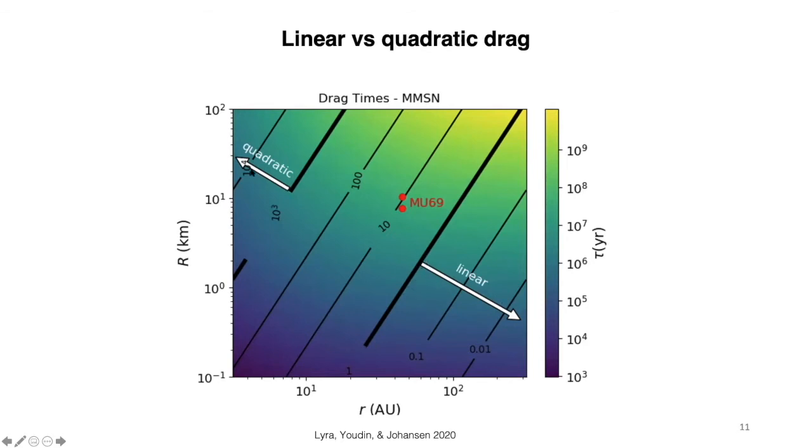This is the line here where the Reynolds number past the object is 1, so you have a linear drag. And then, on here, you have a turbulent drag. The drag becomes quadratic. MU69 is straddling the transition between linear and quadratic drag.